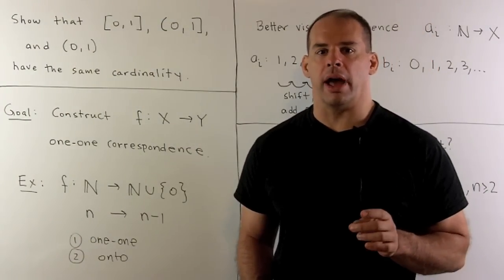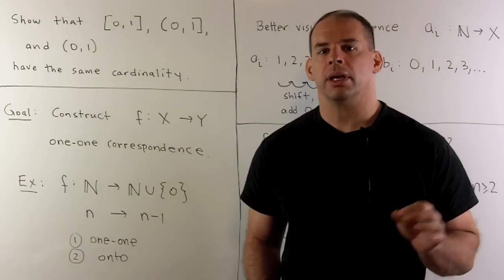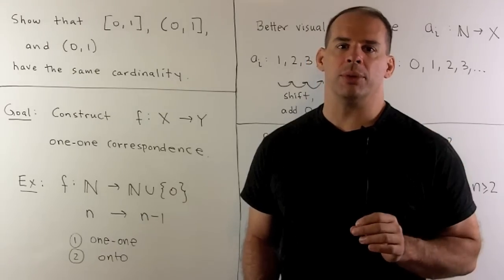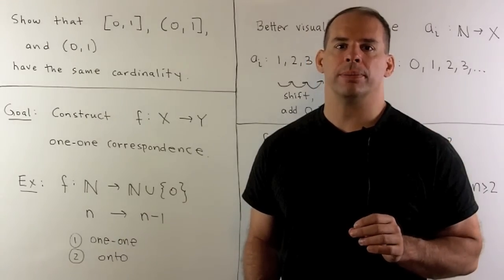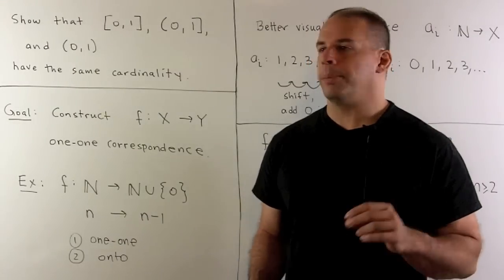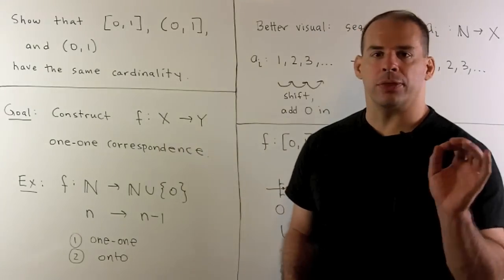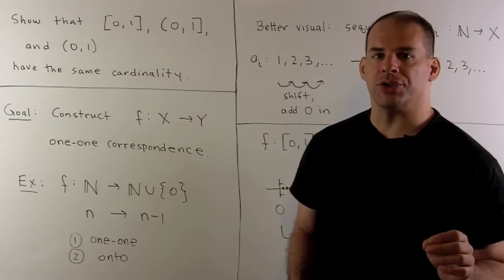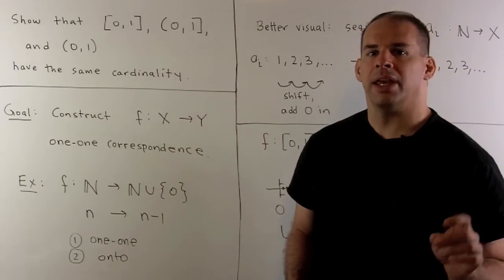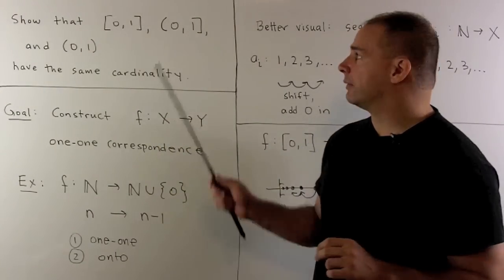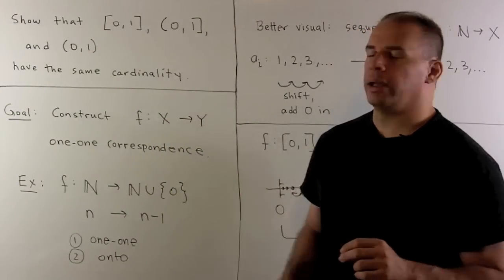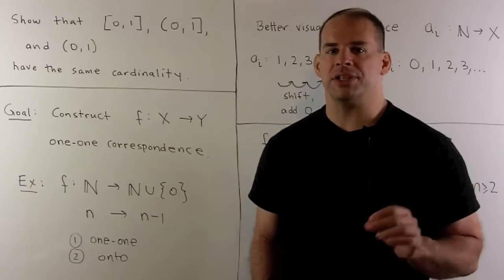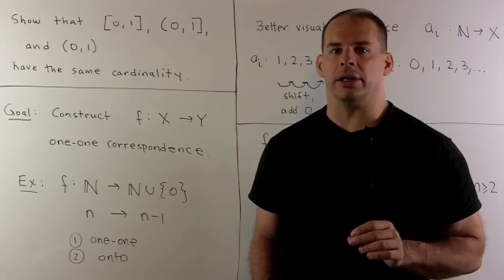Here's another problem on cardinality. In this case, we use uncountable sets. I want to show that the three sets — closed interval [0,1], half-open interval [0,1), and open interval (0,1) — all have the same cardinality.